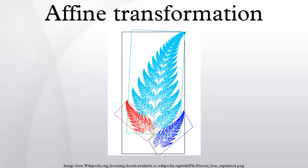For example, describing a transformation as a rotation by a certain angle with respect to a certain axis may give a clearer idea of the overall behavior of the transformation than describing it as a combination of a translation and a rotation. However, this depends on application and context.